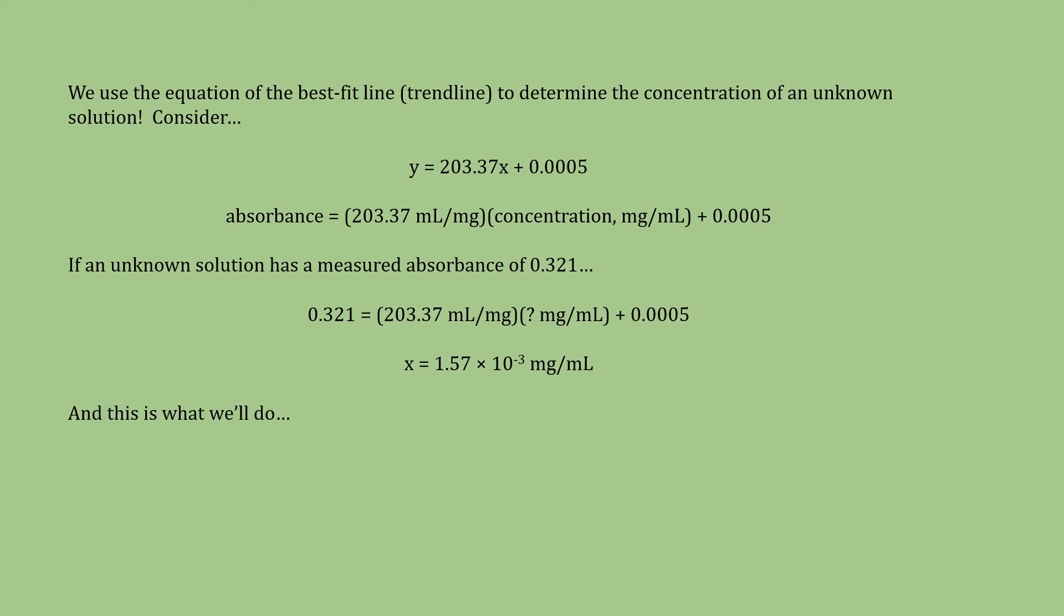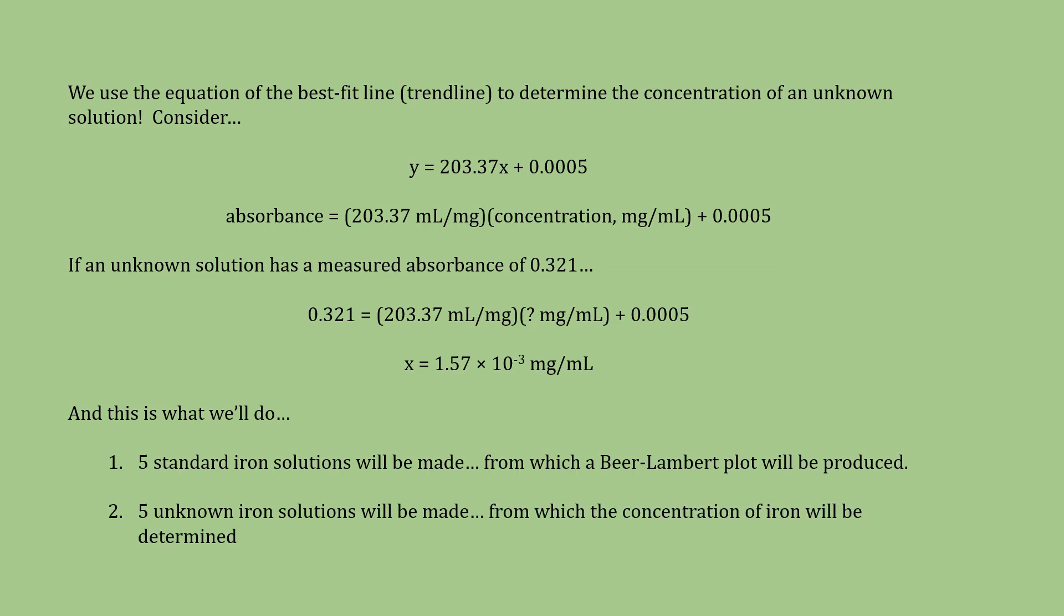In case you're wondering, this is what we get to do. In this experiment, we'll find ourselves producing five standard iron solutions. And from those five standards, we will produce a Beer-Lambert plot. Then, we'll produce five unknown iron solutions. We measure the absorbance of those unknowns. And then calculate the concentration of iron in the unknown using our Beer-Lambert plot.